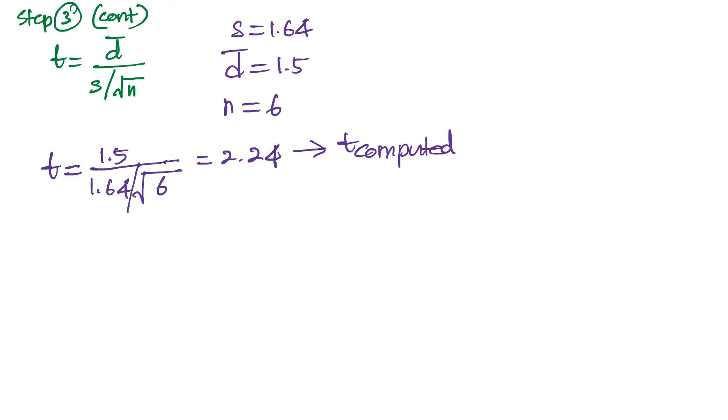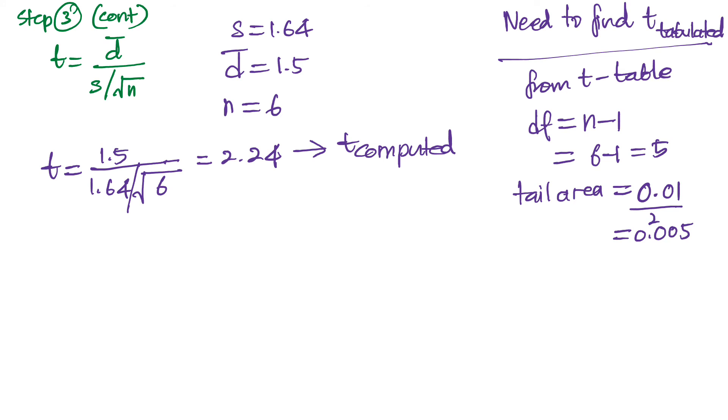Next we have to find what is tabulated t or the t value obtained from the table. So what are the information needed is the df, the degree of freedom, which is equal to n minus 1, and in this case is 5.